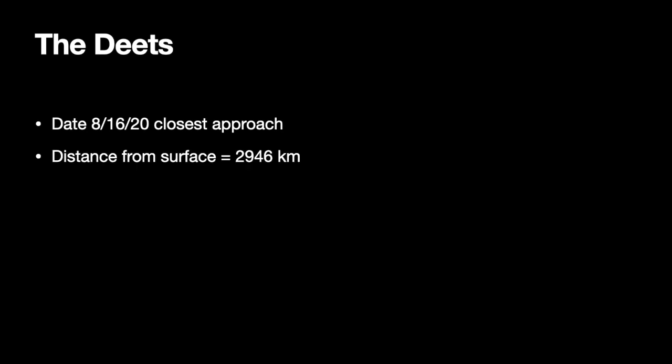So the details: this was August 16, 2020, the closest approach of this asteroid, and it was 2,900 kilometers from the surface of the Earth at its closest approach. The size — we don't actually know the size, but it's approximately a 3-meter diameter. That's what I'm going to use. And it had a velocity of about 12 kilometers per second, though the velocity changes as it moves.